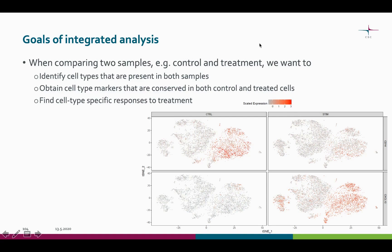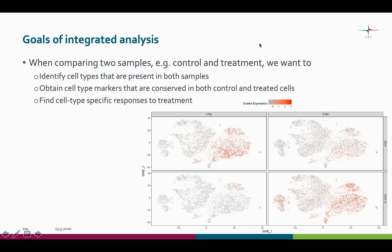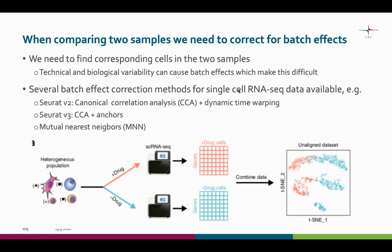Often when you are comparing two samples, for example treated and non-treated samples, you want to again identify the cell types present in both samples and identify the conserved cell type markers, meaning genes that are expressed in a certain cell type in both of the samples. You might also want to find cell type specific responses to the treatment.